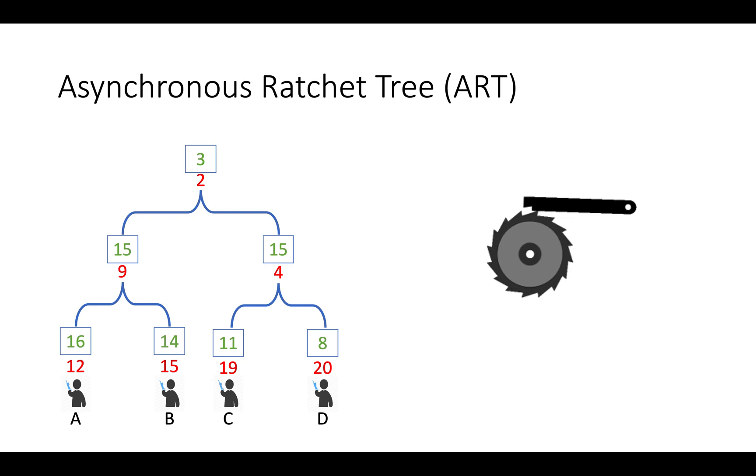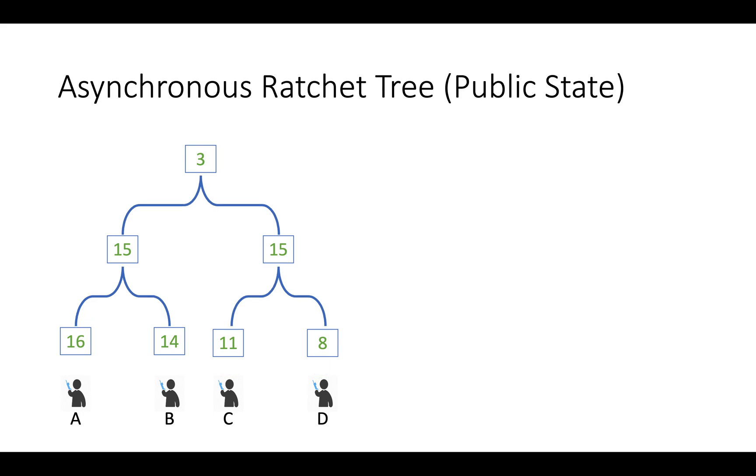Let's understand different form of this tree. This is called public state. This is common for all group members. So, only one copy is maintained at server per group.